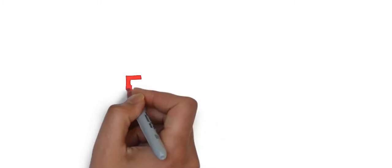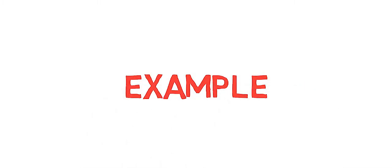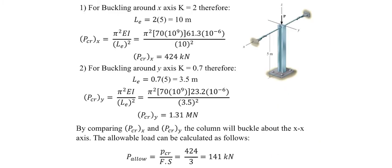Now we're going to look at one example. An aluminum column is braced at its top to prevent movement along the X axis and is fixed at its base. We are looking for the largest allowable load P that can be applied, using a factor of safety of 3. The modulus of elasticity is 70 GPa, yield stress is 215 MPa, cross-sectional area is 7.5×10⁻³ m², moment of inertia about the X axis is 61.3×10⁻⁶ m⁴, and about the Y axis is 23.2×10⁻⁶ m⁴.